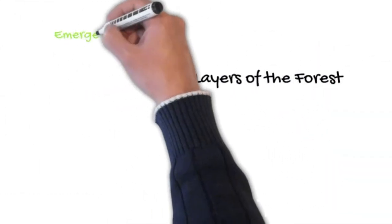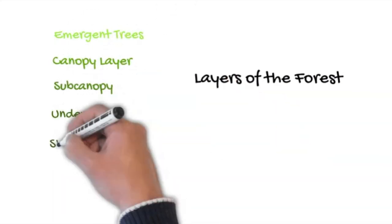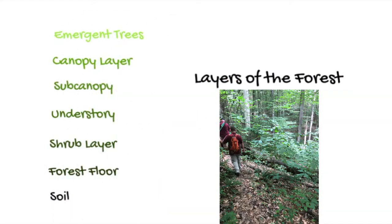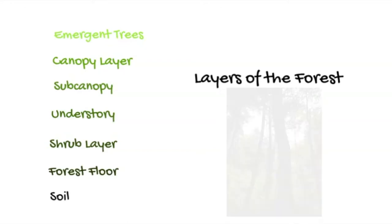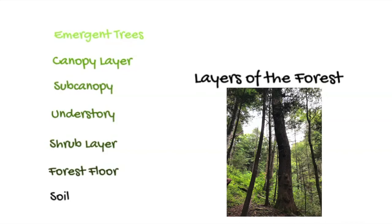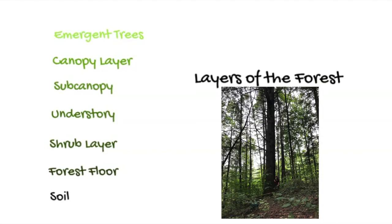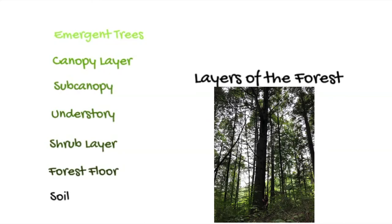Let's talk about the layers of the forest. We start with the soil, which is usually rich, dark, and moist. Then you have the forest floor with leaf litter, then the shrub layer, and then an understory — which includes the smaller trees and bushes. Above that is the sub-canopy and canopy layer with really tall trees. At the very top are the emergent trees, which are above the canopy.